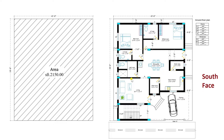In today's session, I am going to explain in detail about the ground floor with dimensions 43 feet by 50 feet, with a plot area of 2150 square feet. This is one of the very best plans, having a south facing, and this plan is according to building bylaws, that is Vastu. According to Vastu, we have designed this plan. So now let us see and discuss in detail.